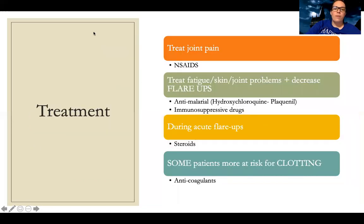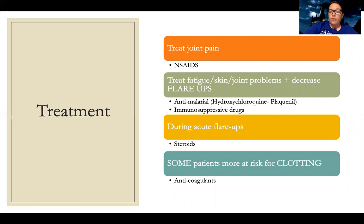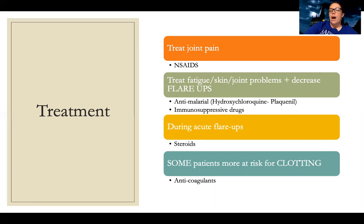For overall treatment: we want to treat their joint pain, so NSAIDs or anti-inflammatories are really helpful for the joint pain and arthritis. They will have fatigue, skin and joint problems, and a lot of flare-ups. One of the most common drugs used is an anti-malarial like Plaquenil, which can help decrease flare-ups. Immunosuppressive drugs are used as well. Anti-malarials are not immunosuppressants, but they do suppress the immune response in a different way — effectively helping to reduce flare-ups.